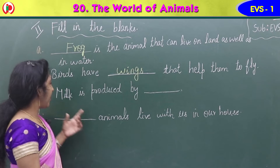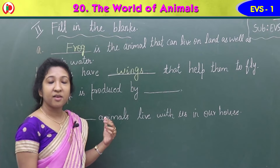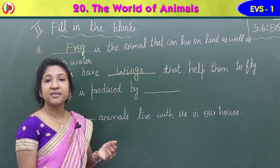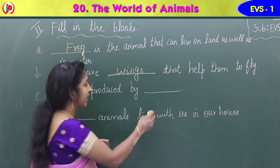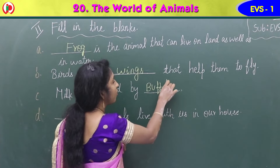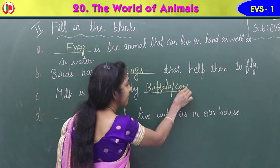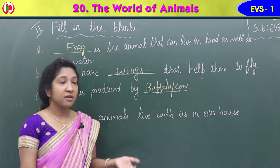Third one, C: milk is produced by which animal? You can write cow, C-O-W. Cow gives us milk. Or you can write buffalo, B-U-F-F-A-L-O. Any one you can write — cow or buffalo.